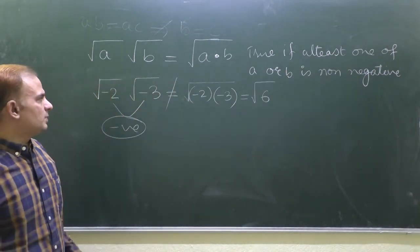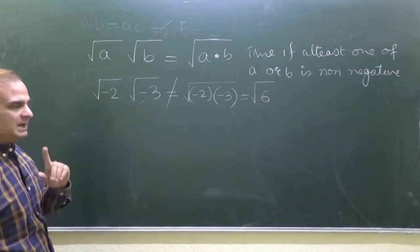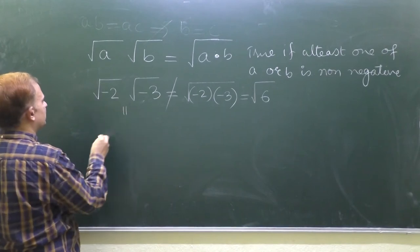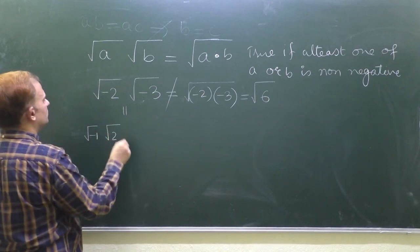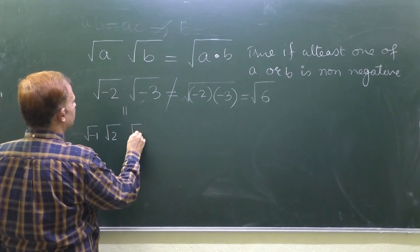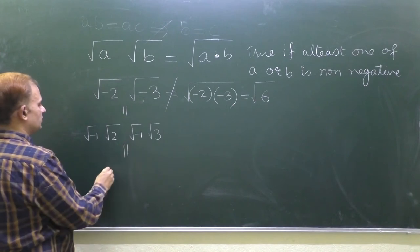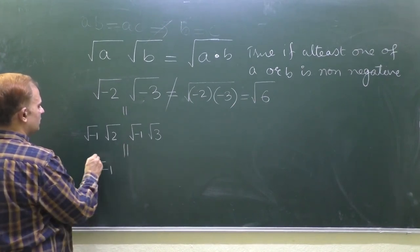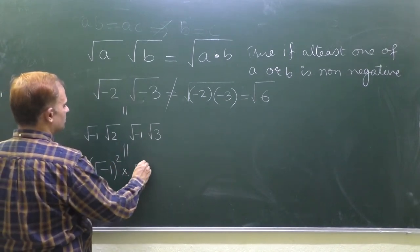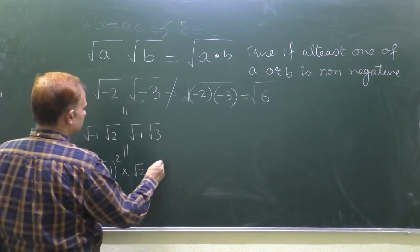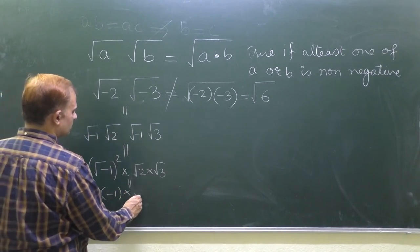So what would be the correct result of this root of minus 2 into root of minus 3? Let us see. Root of minus 2 you can write as root of minus 1 into root of 2, which is equal to root of minus 1 whole square is equal to root 2 into root 2 into root 3. Therefore, this is minus 1 and this is root 2 into root 3.